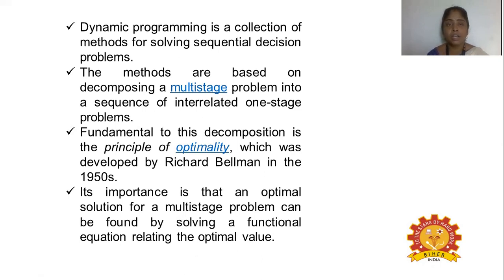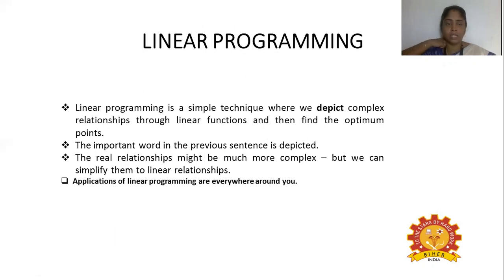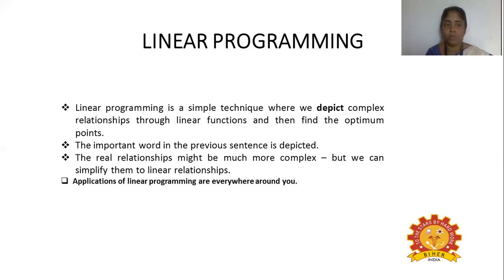The optimal solution for a multi-stage problem can be formed by solving a functional equation relating to the optimal value. In linear programming, we use the equation in a linear form — y = mx + c — to derive solutions and find the optimal value. In bioprocess, this is used to find the specific growth rate, Michaelis-Menten constant, and yield coefficient using the linear programming technique.